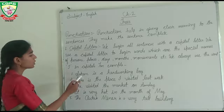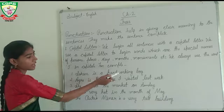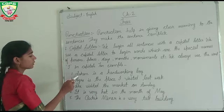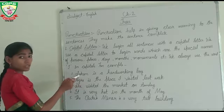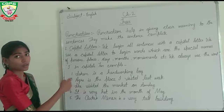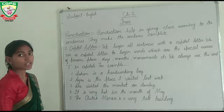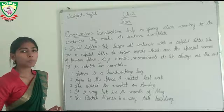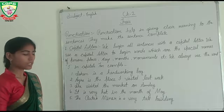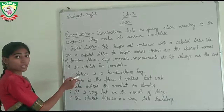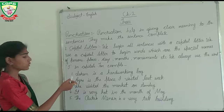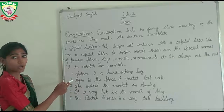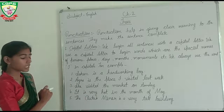For example: 'Sohan is a hard working boy.' Here, Sohan is a proper noun. In our last video we talked about proper nouns. A proper noun is always written with a capital letter. So Sohan is written with a capital letter because it is a proper noun.